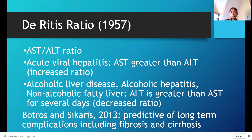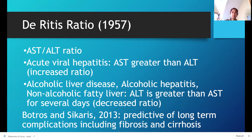According to a journal I found from 2013 by Botros and Sicaris, a critique of the De Ritis ratio is that it is oversimplified — it does not capture the whole picture of AST and ALT. However, the De Ritis ratio can still be used as a predictive indicator of long-term complications including fibrosis and cirrhosis.